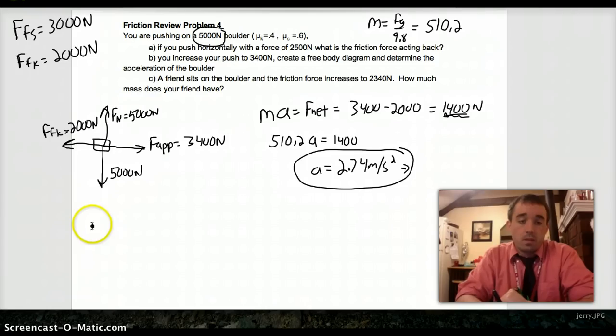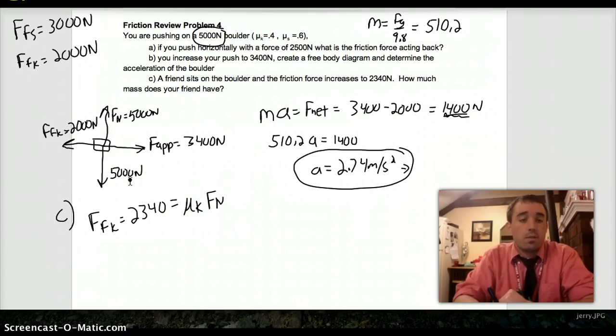Well, I'm looking at FFK goes up to 2340. But, I know that FFK is equal to mu K, that's a part C, times the normal force. And, I know that the normal force relates to the weight. And, I know that the boulder weighs 5,000. So, whatever I get for the normal force, there has to be that little difference.